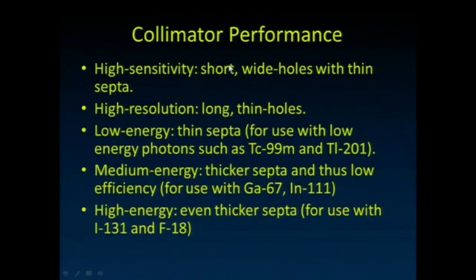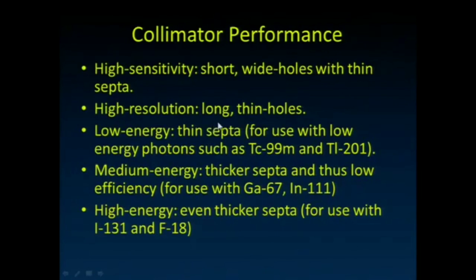High sensitivity collimators allow collection of as much radiation as possible; they tend to have short, wide holes with relatively thin septa. High resolution collimators have long, thin holes. Low energy collimators image radionuclides with relatively low energy gamma rays and don't need thick lead septa. High energy collimators, of course, have very thick septa to stop high energy gamma rays from penetrating through.